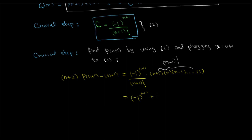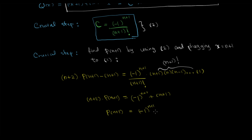Then we add (n+1) to both sides, giving (n+2)·P(n+1) = (-1)^(n+1) + (n+1). Therefore P(n+1) = [(-1)^(n+1) + (n+1)] / (n+2).